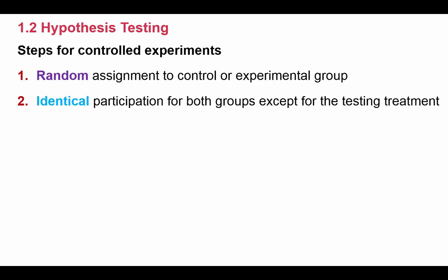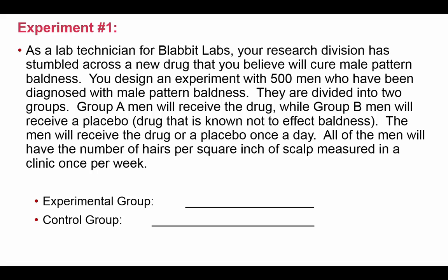And then again, identical participation for both groups except for the testing treatments. You want to make sure that everything else is controlled, stays the same in the groups except for the thing that you're actually testing. So again, the same experiment we talked about before. Remember, you're testing a new drug, divided the men into two groups. Group A received the drug, group B received the placebo.